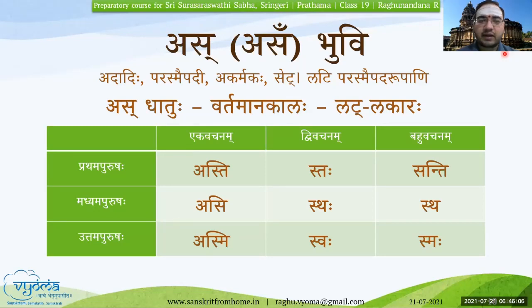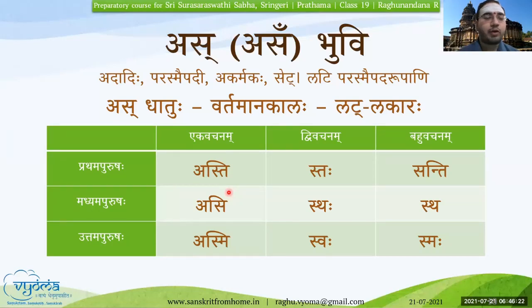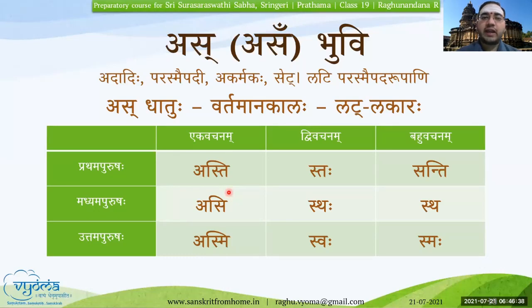Keep practicing. Because just remembering the forms is not enough — we need to use them according to Purusha: Saha, Tau, Te for Prathama Purusha; Tvam, Yuvam, Yuyam for Madhyama Purusha; and Aham, Avam, Vayam for Uttama Purusha. Only with practice will we be able to use them spontaneously. When reciting Dhatu Rupani, first become confident in the forms, then use them accordingly — Saha karoti, or Esha Ramah, Balah, etc.